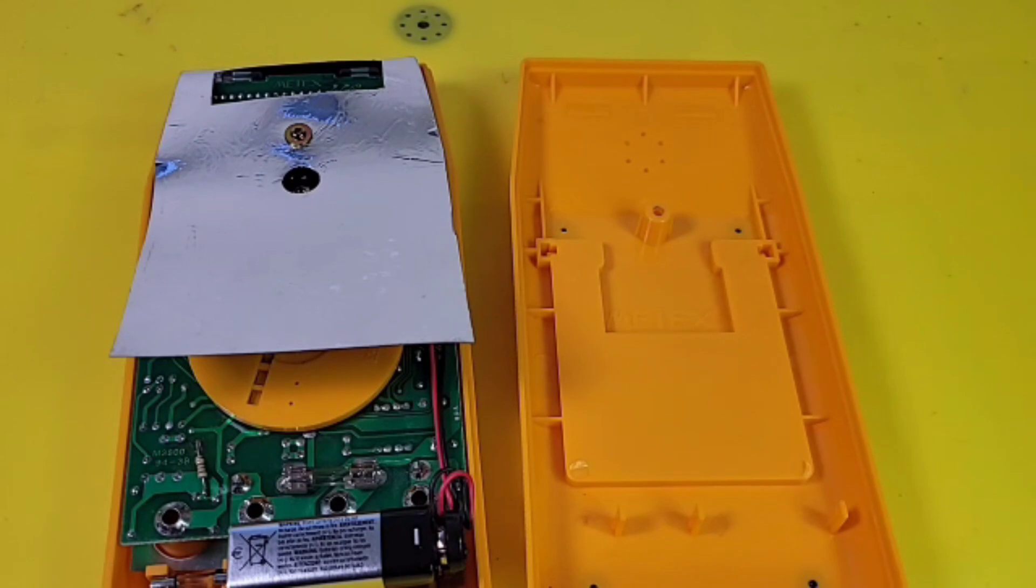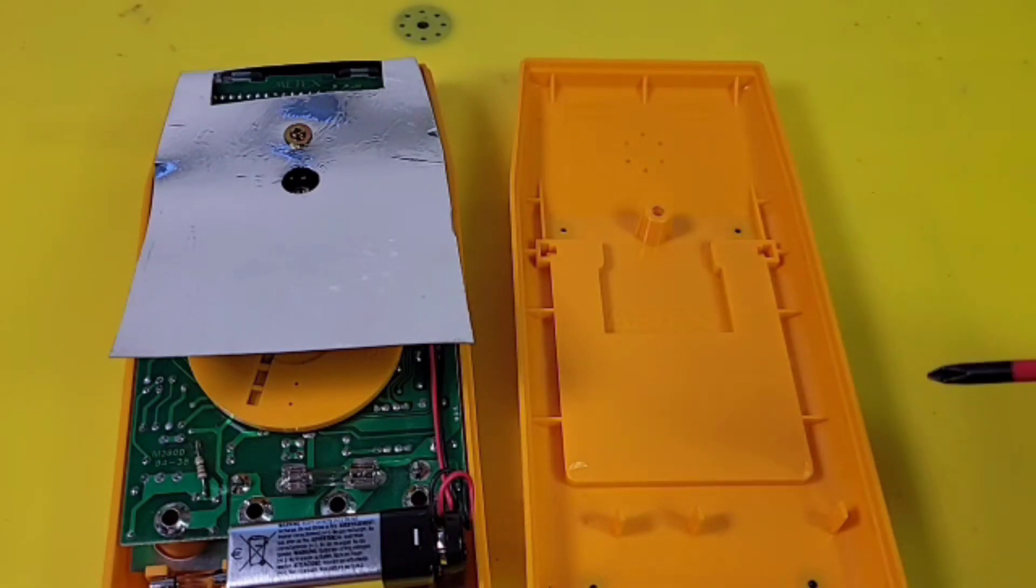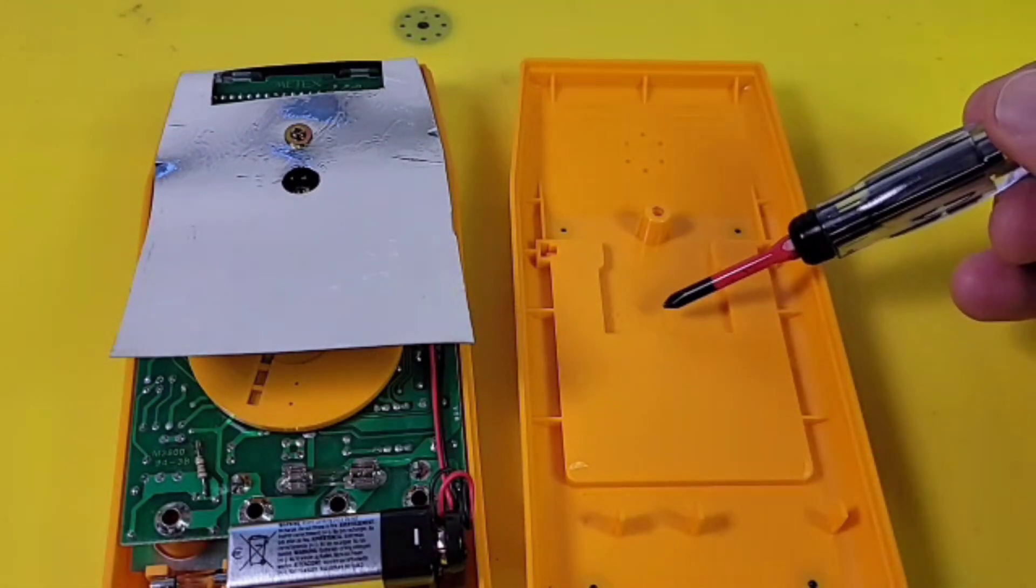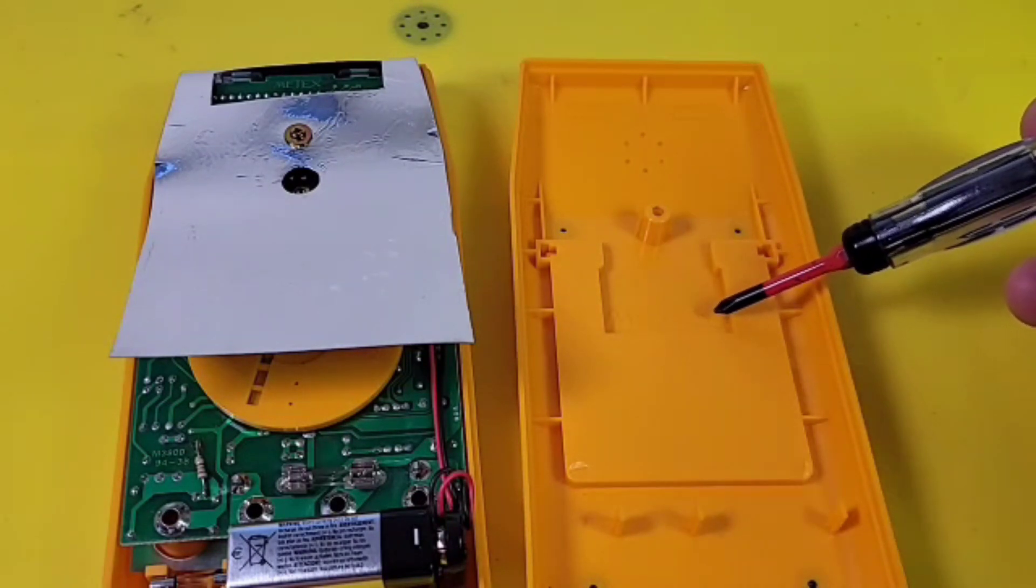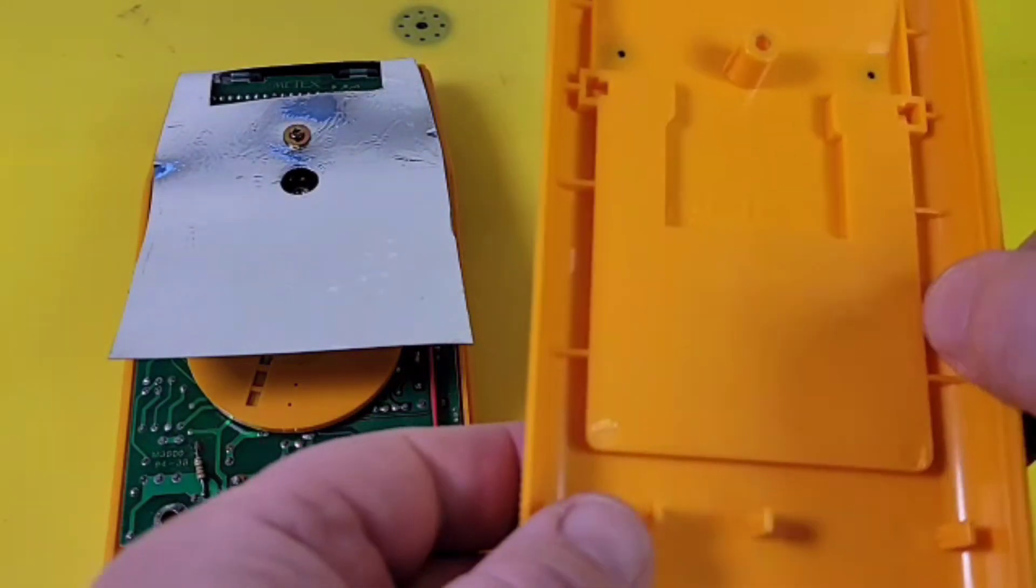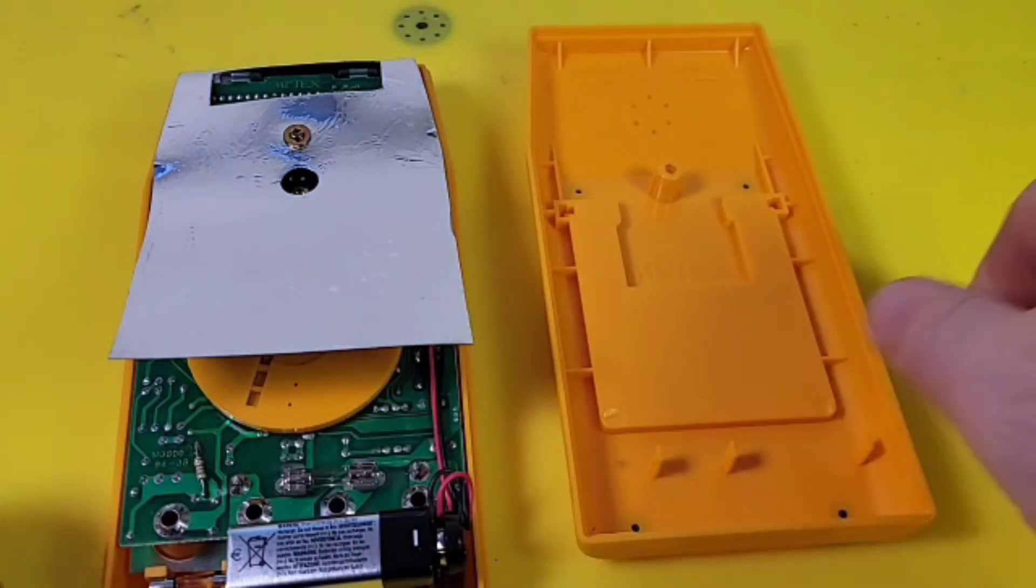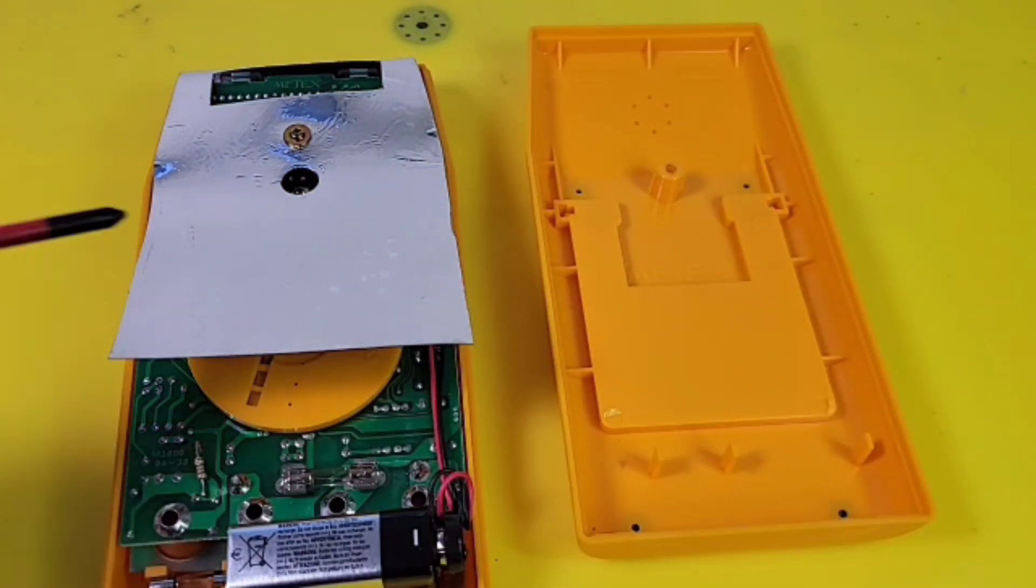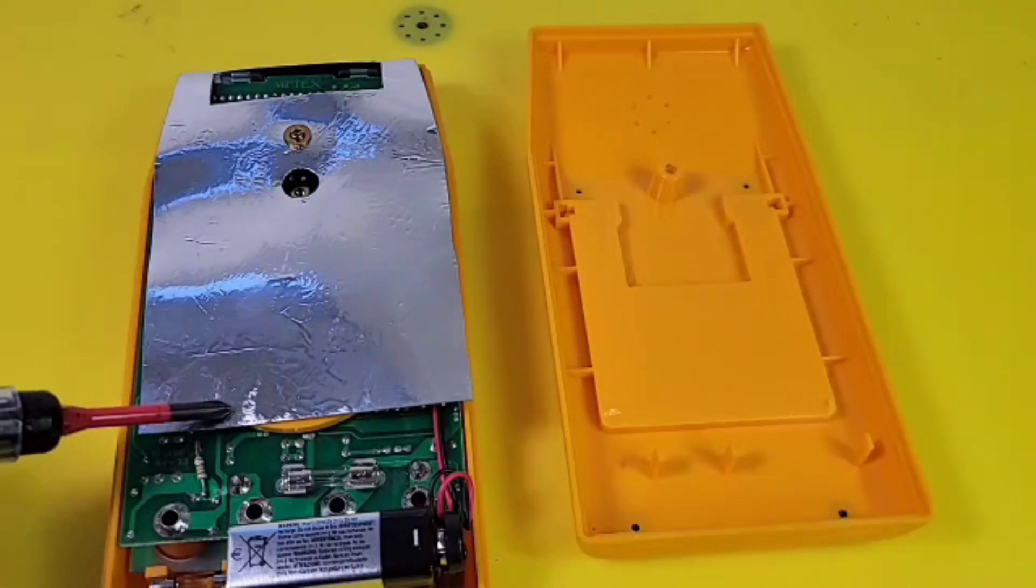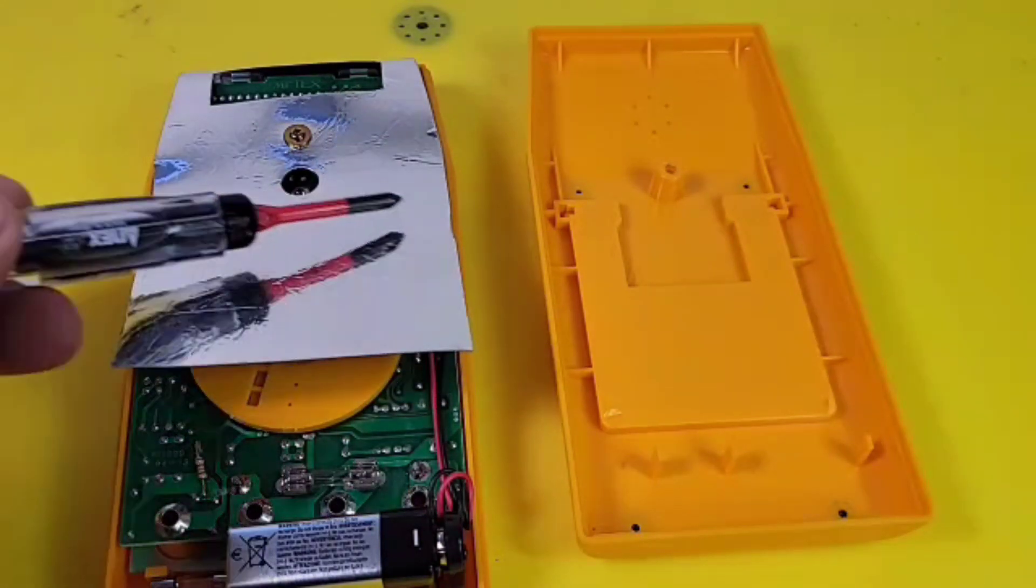Now we're on the inside of this beautiful Metex multimeter vintage 1994-ish. Look at that. We have the Metex logo embossed embedded into that plastic. Very nice little attention to detail here. And on the left, look at that. Who would have thought? Yeah. They gave us shielding. Oh, beautiful.